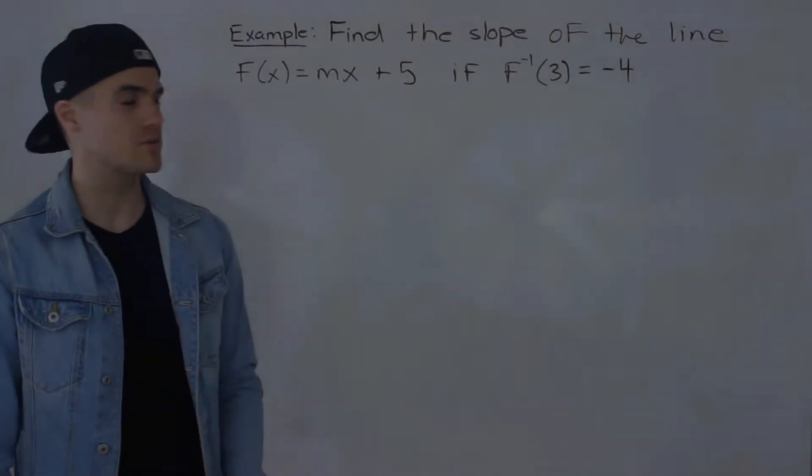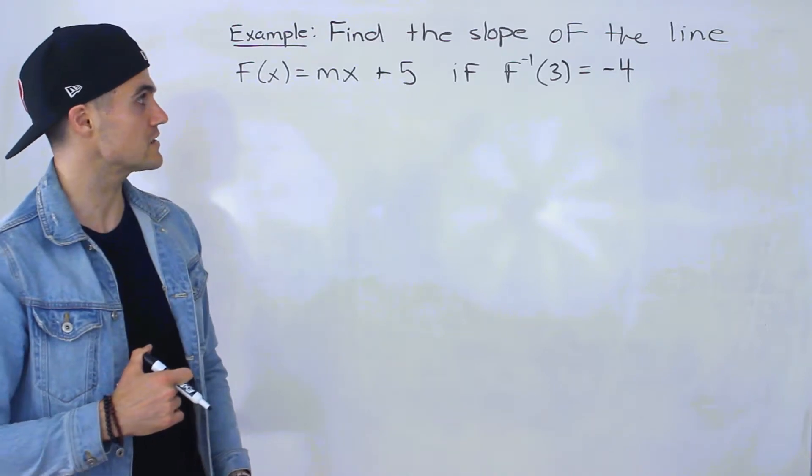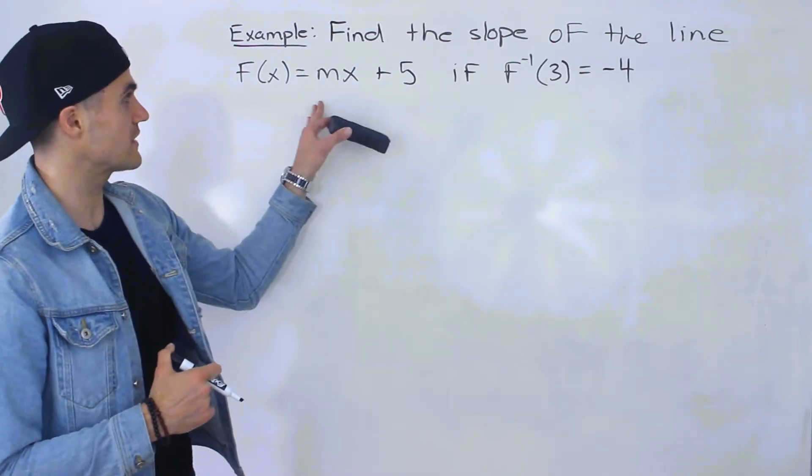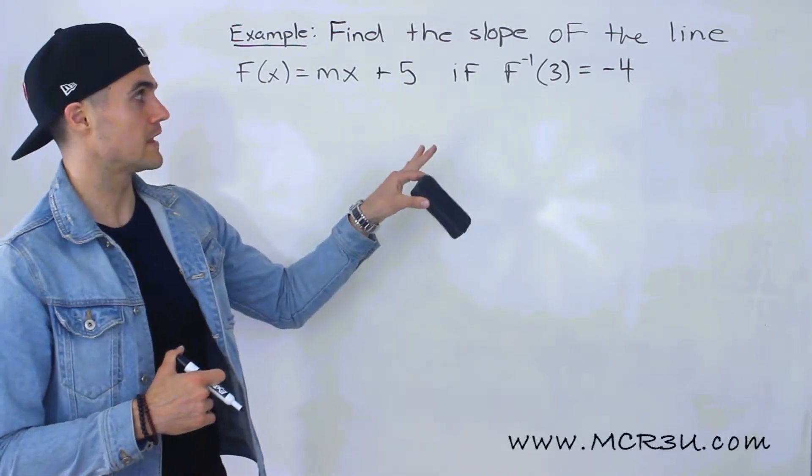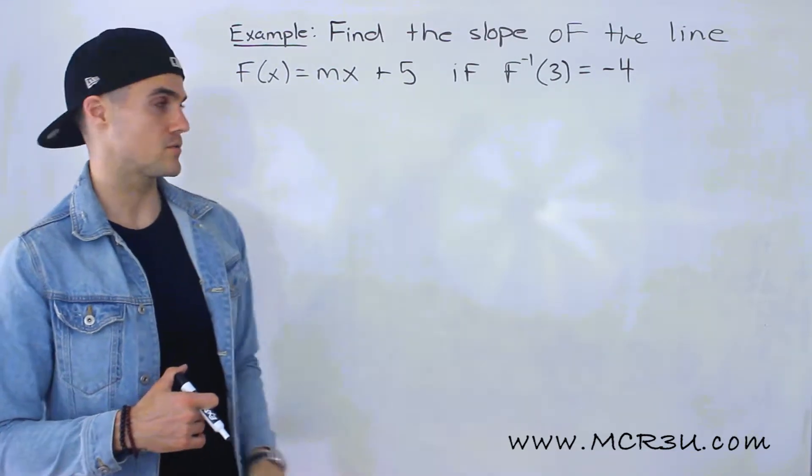Welcome back everyone. Moving on to the next example dealing with the inverse of a function. So we have to find the slope of the line f(x) = mx + 5 if f inverse of 3 is equal to negative 4.